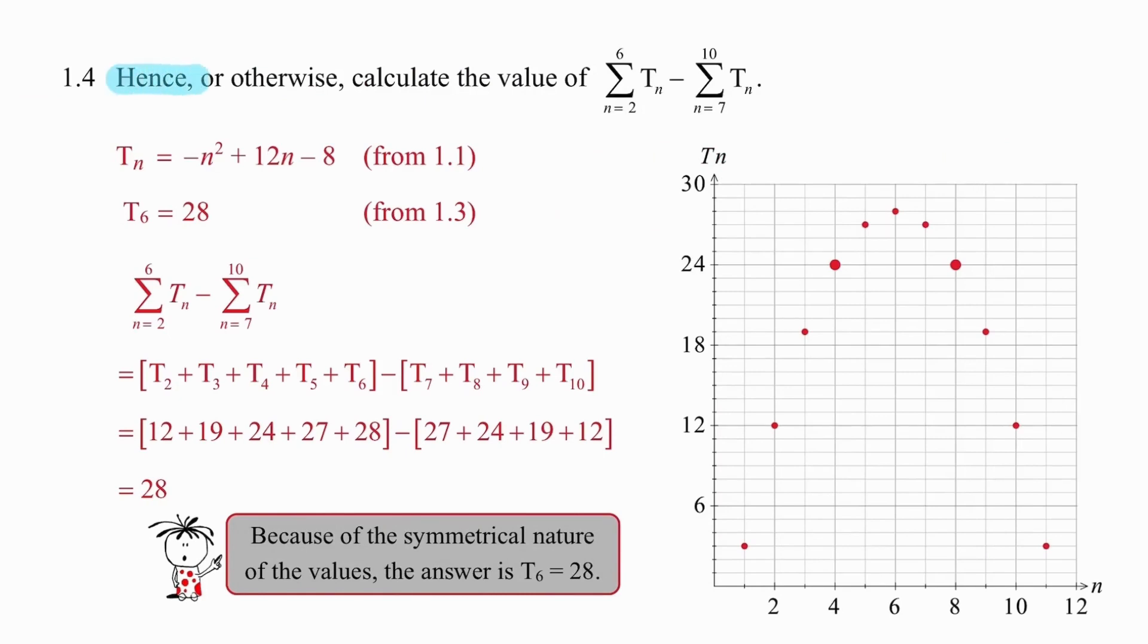In question 1.4 the instruction is hence or otherwise calculate the value of this expression. Hence tells us that we can use what we've already done or otherwise says if you prefer you may start from scratch. I'm going to choose to use the formula that I worked out in question 1.1 and if necessary the fact that t6 is 28 from question 1.3.